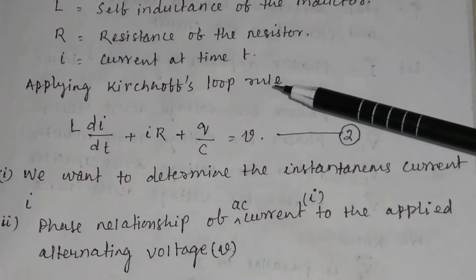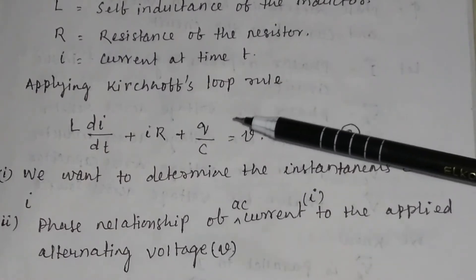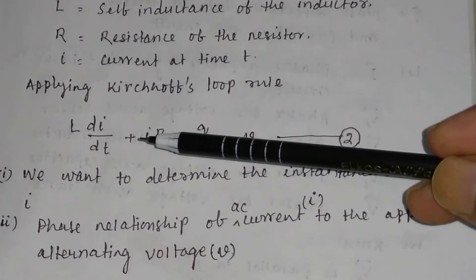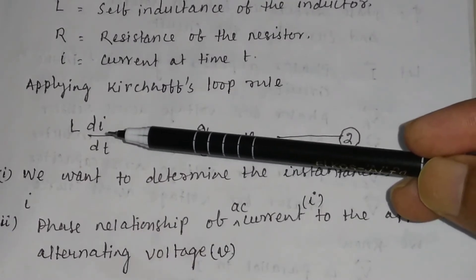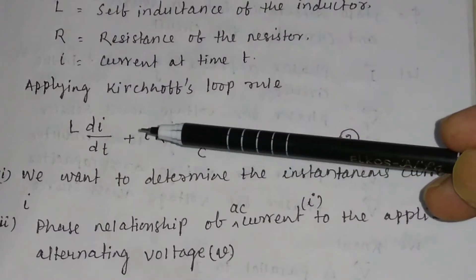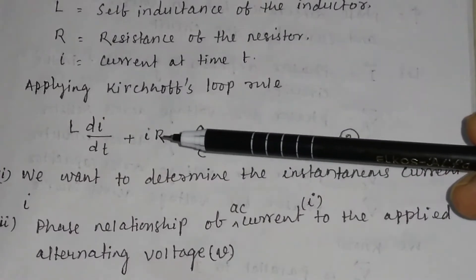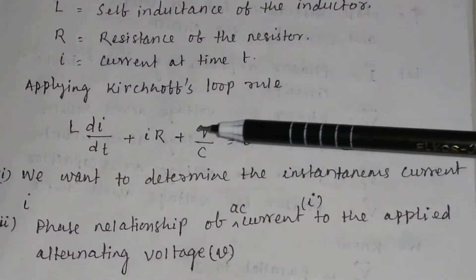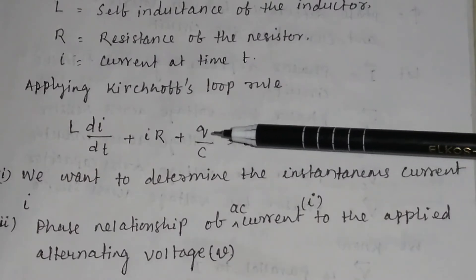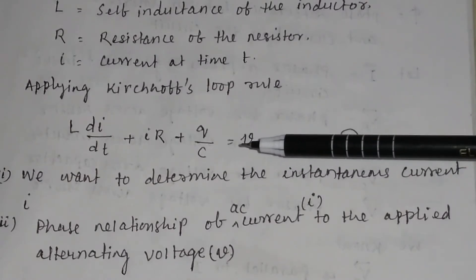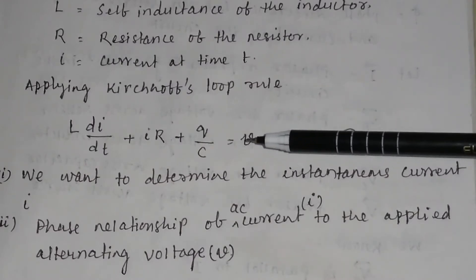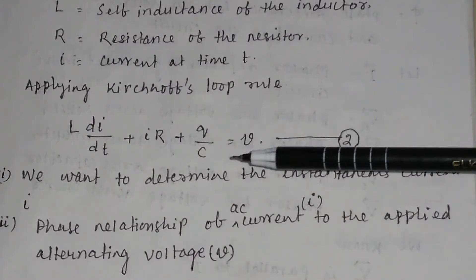Applying Kirchhoff's loop rule, we can write the voltage drop across the inductor L·(di/dt), plus the voltage drop across the resistor I·R, plus the voltage drop across the capacitor Q/C, is equal to the source voltage V.